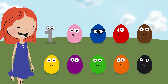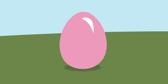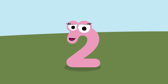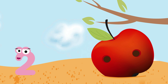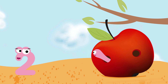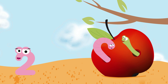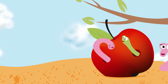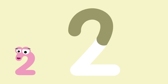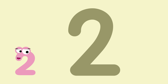What could be inside the pink egg? Number two! Look! What a sweet little worm! Peekaboo! Where are you? Here I am! I see you! We write number two like this. Two!